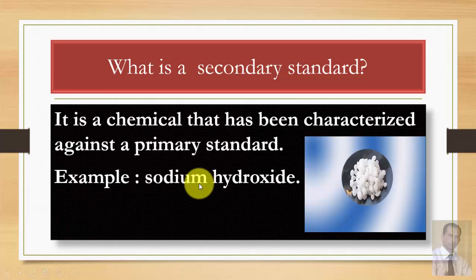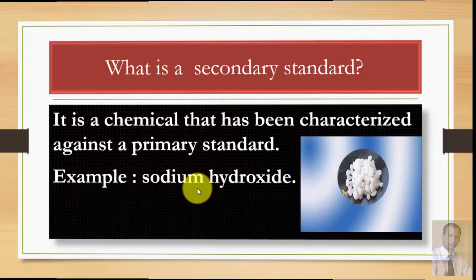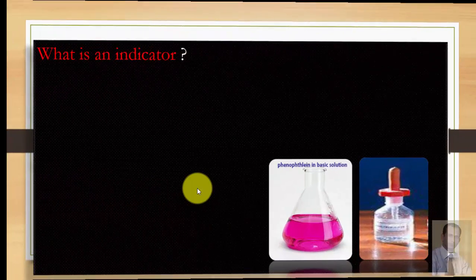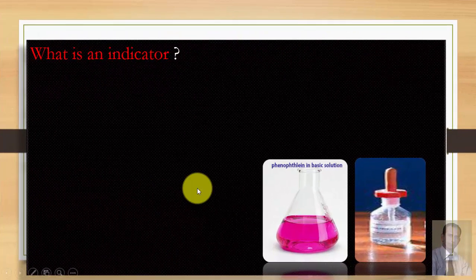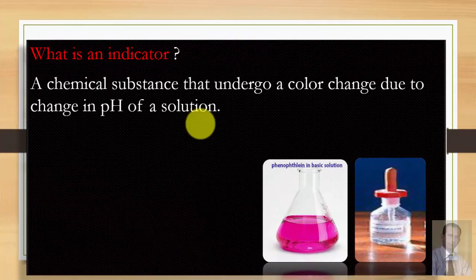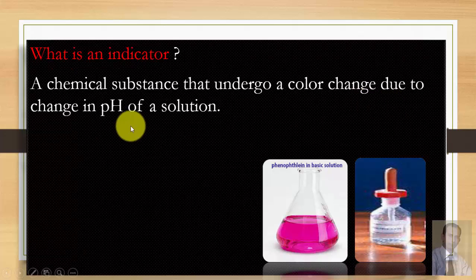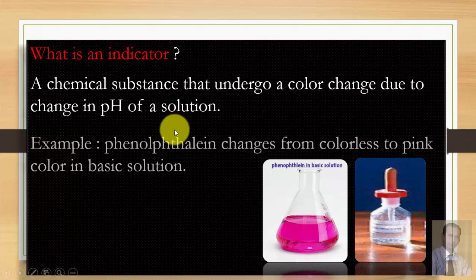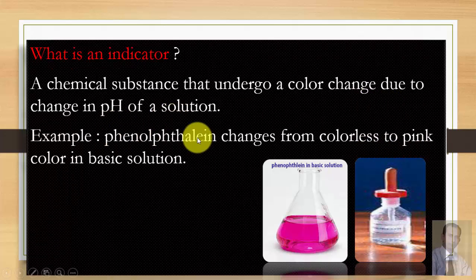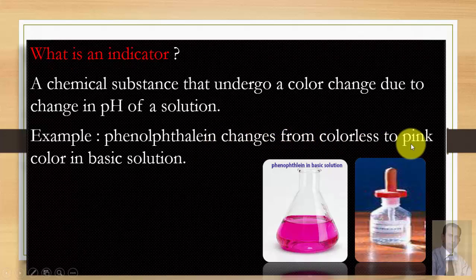What is an indicator? An indicator is a chemical substance that undergoes a color change due to a change in pH of a solution. An example is phenolphthalein, which changes its color from colorless to pink in a basic solution.